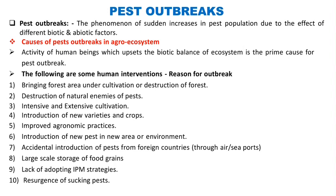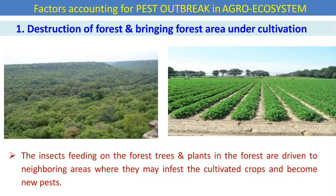The first cause is destruction of forests and bringing forest areas under cultivation. Insects feeding on forest trees and plants are driven to neighboring areas where they infest cultivated crops and become new pests. This is one of the reasons for outbreaks of forest pests towards cultivable land.